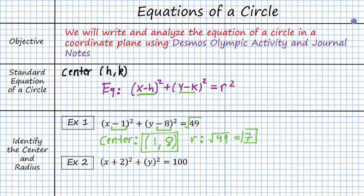And then the same thing will happen in example 2, except now we see that we have this sign change, so that means my h is actually negative, so my center will be at -2.